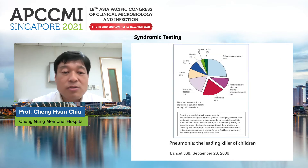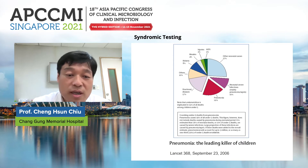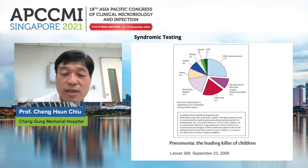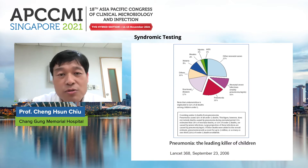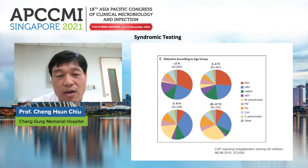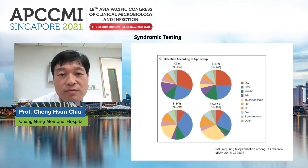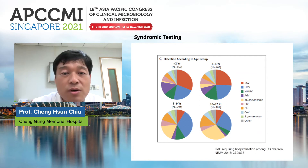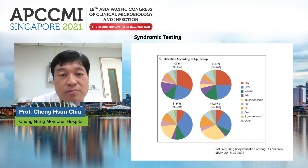As you know, lower respiratory tract infection — specifically pneumonia — remains the leading killer for children. A lot of microorganisms can cause pneumonia in children, and as you can see from this figure, the distribution of these microorganisms is different from one age group to another.